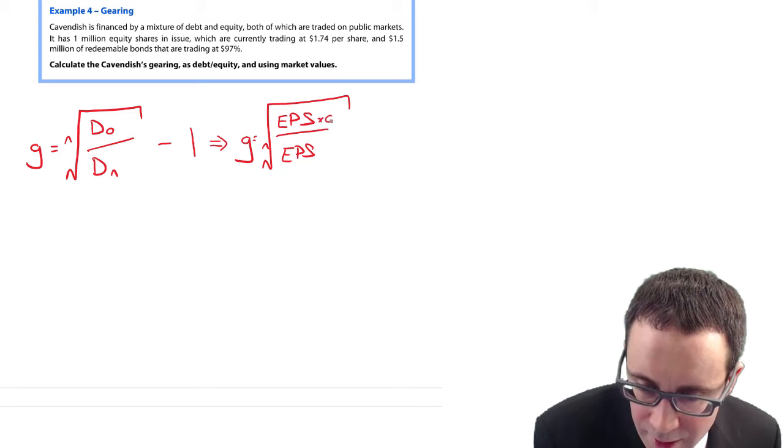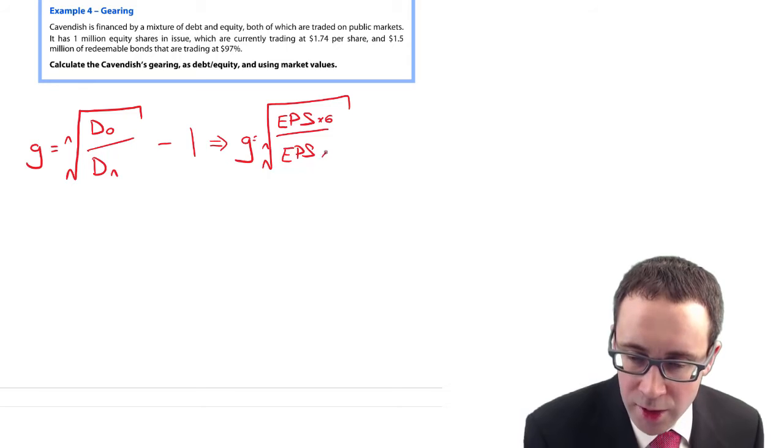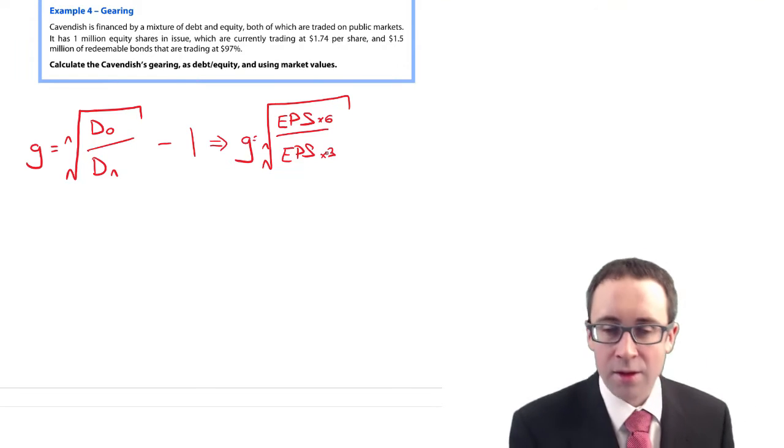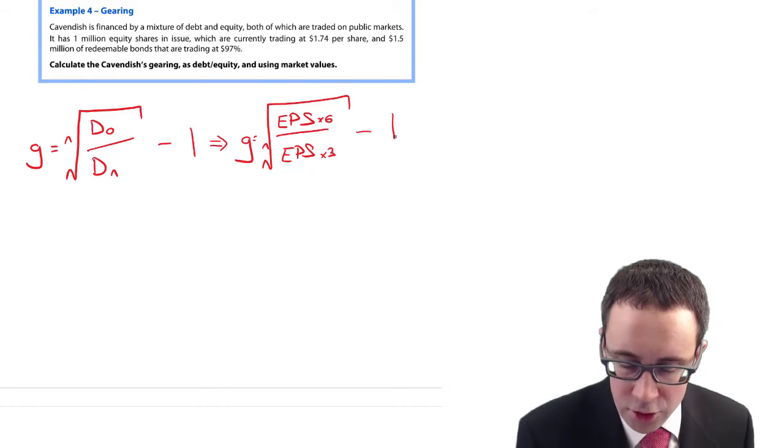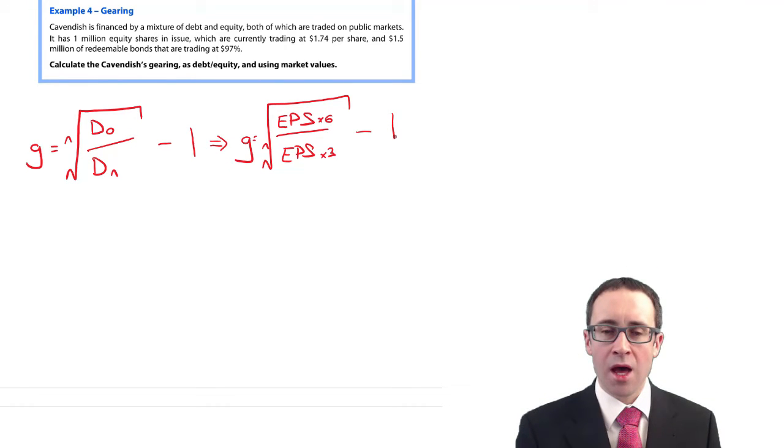Your earnings per share in X6 divided by your earnings per share three years ago in X3. The Nth root, where N is three, and then subtract one.